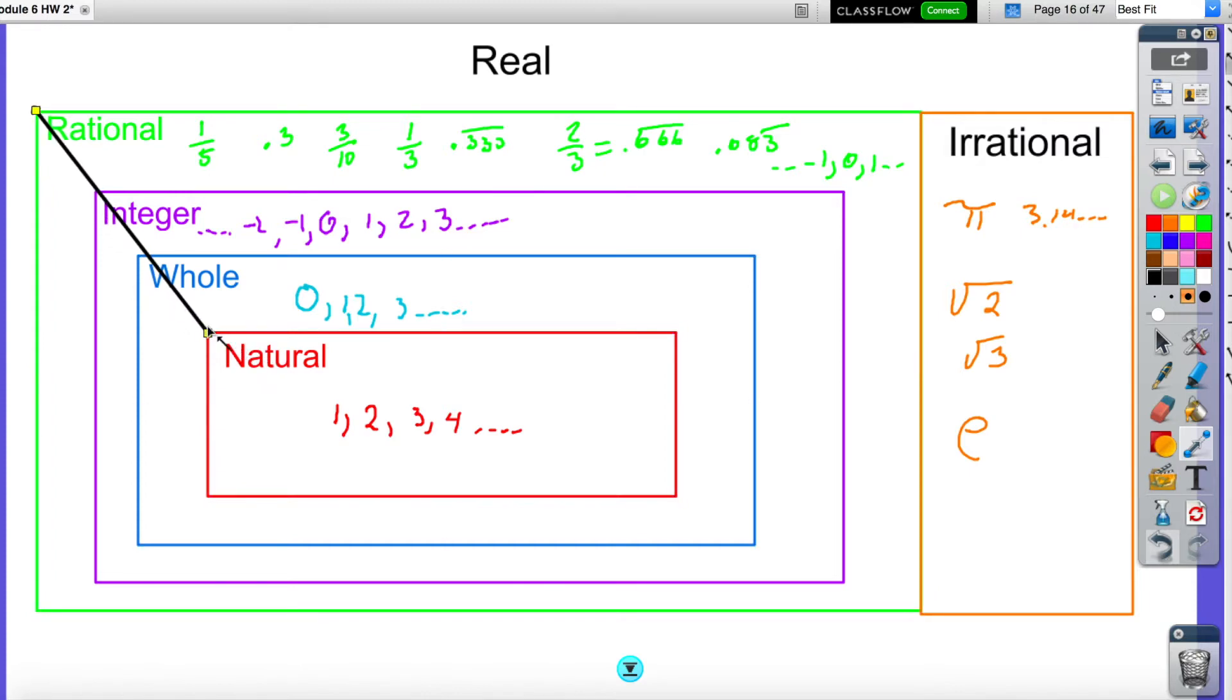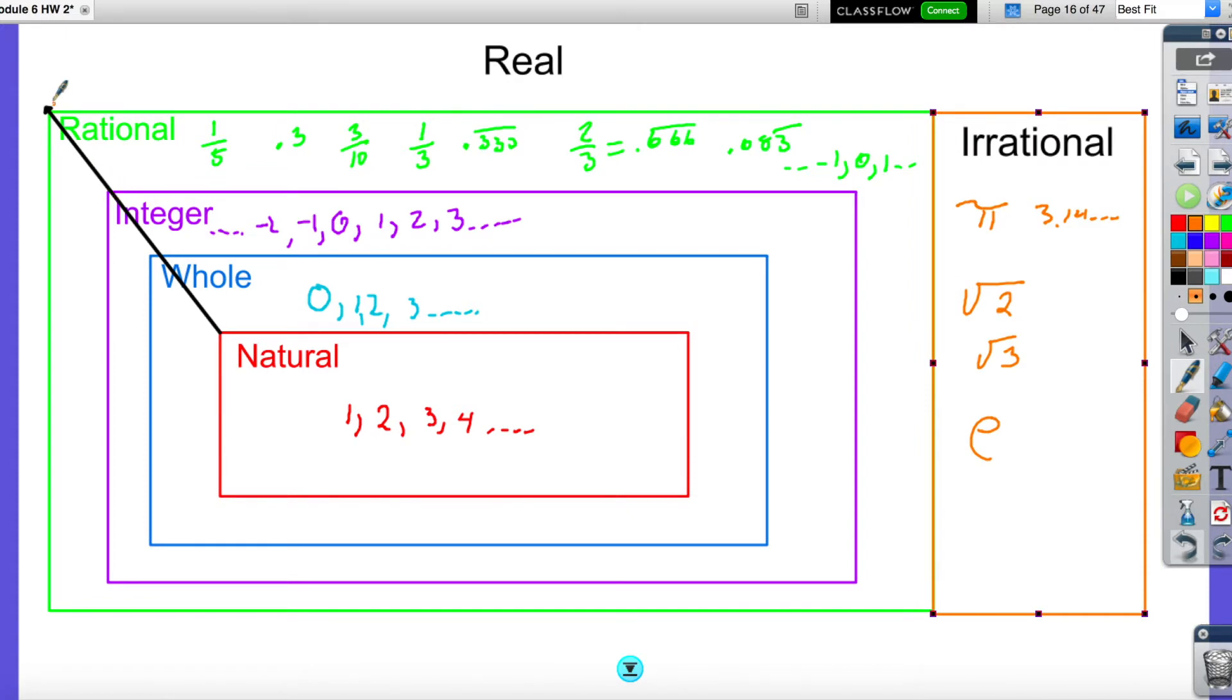If it is a natural number, it is also a whole number, an integer, and a rational number. If it's an integer, it just goes up. It is a rational number and a real number.